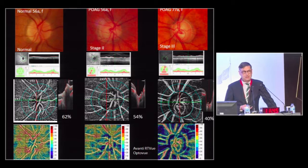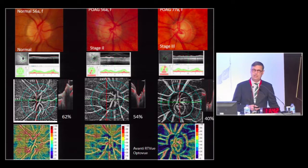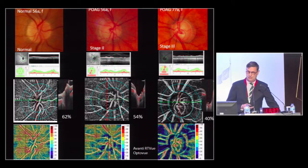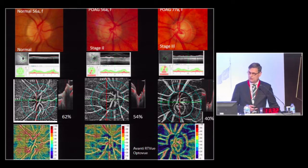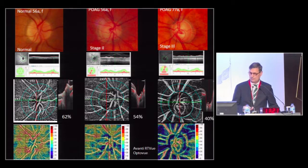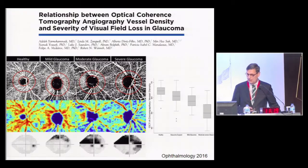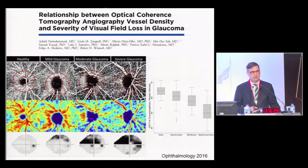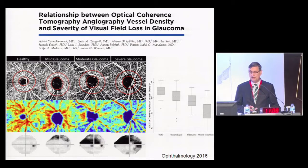With beginning glaucoma stage 2 after Jonas and the thinning of the neuronal rim in the inferior temporal area, you see beginning capillary dropouts in the OCT angio. If the disease continues to a later stage, you see dark areas of capillary dropout in glaucoma. This was described by the group from San Diego in 2016, who nicely correlated the capillary dropout in the superficial layer of the peri-papillary retina with visual field defects.